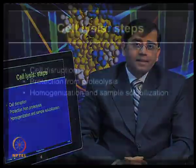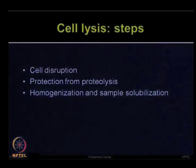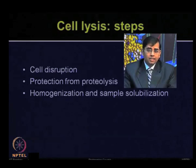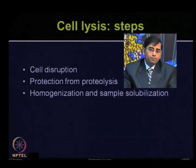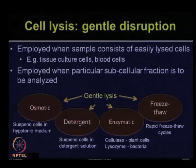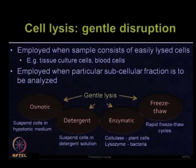The different steps involved in cell lysis are: you need to disrupt the cell, protect from proteolysis during the lysis step, and homogenize and solubilize your sample. Cell lysis can be performed gently or in harsh conditions depending upon the type of cells you want to disrupt. When employing a gentle disruption method, you need to ensure it is efficient enough to break open all the cellular components.